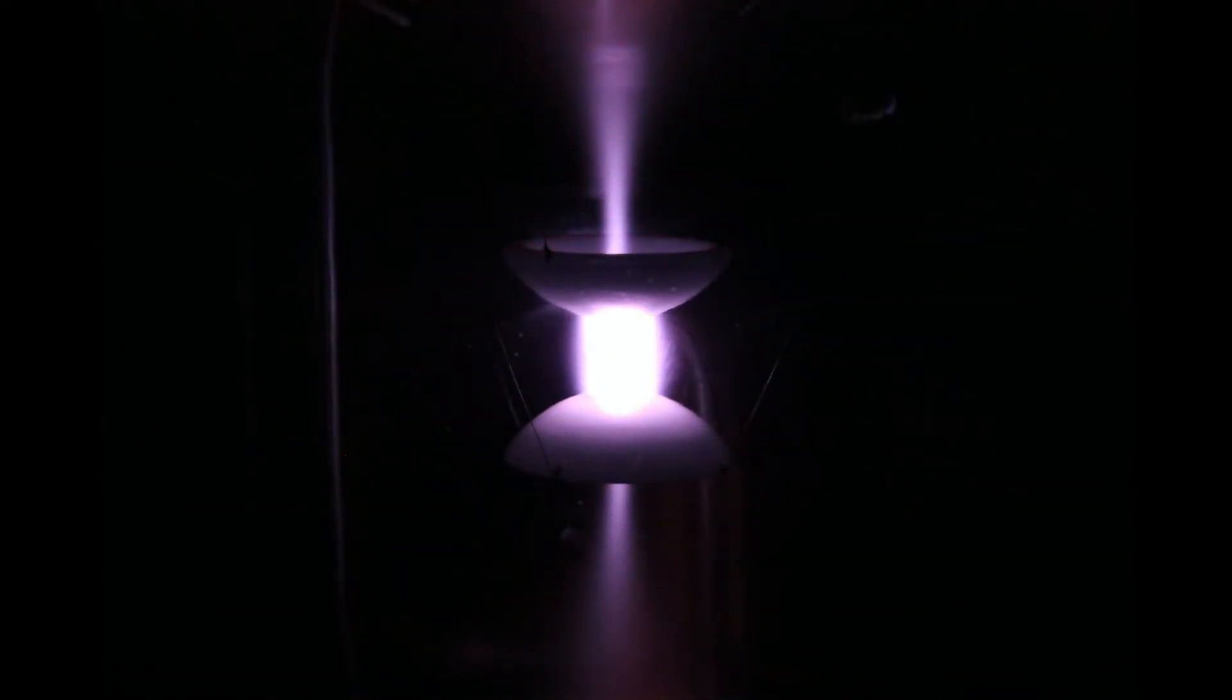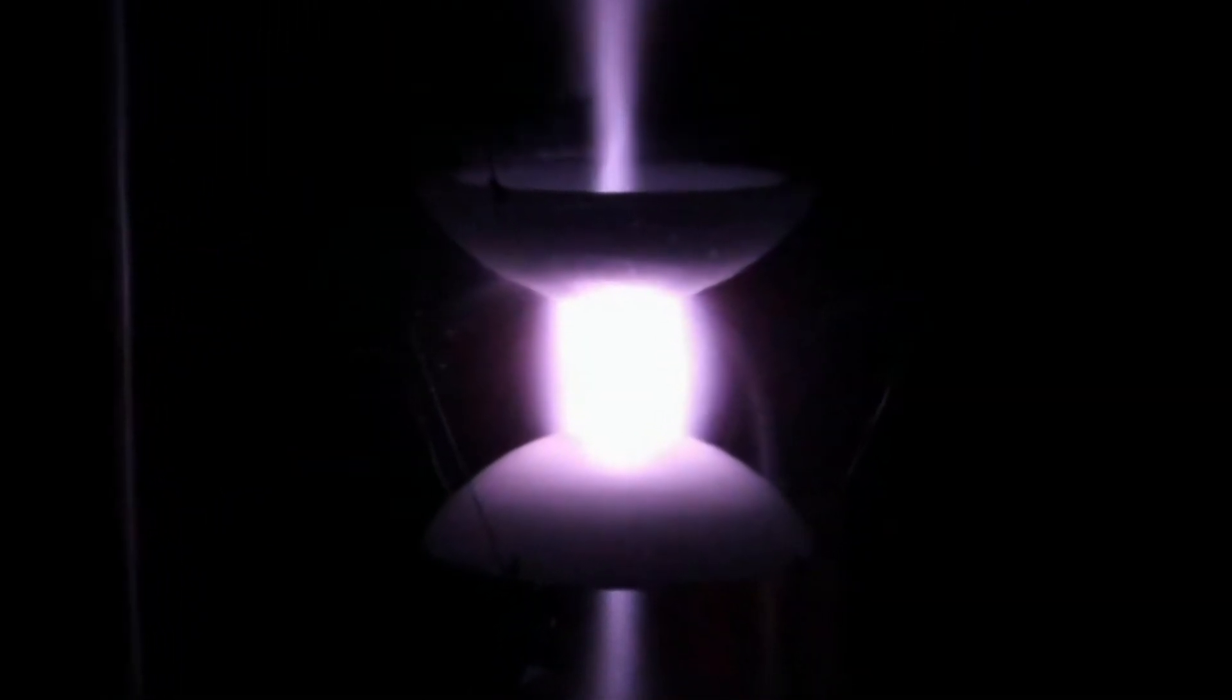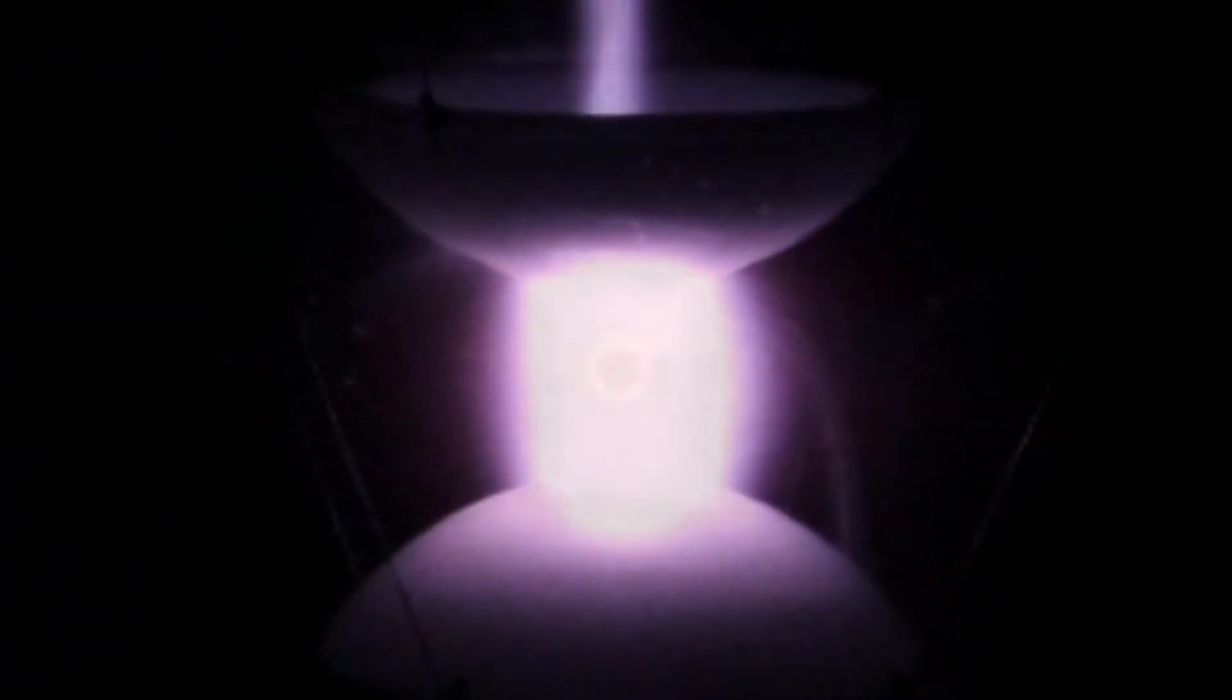As you can clearly see here, a change of magnetic field emitter geometry also results in a change in the shape of the plasma formation within the vacuum chamber.